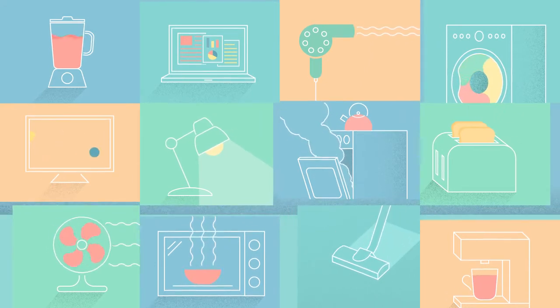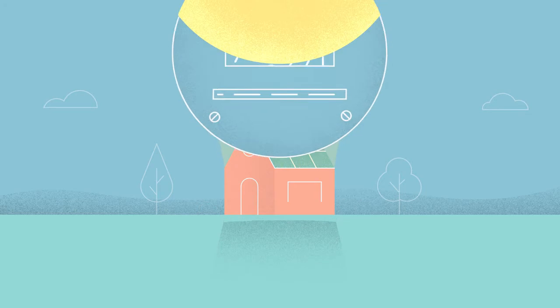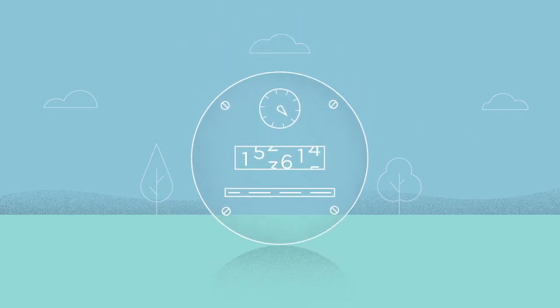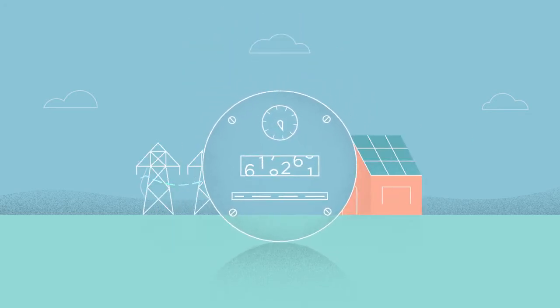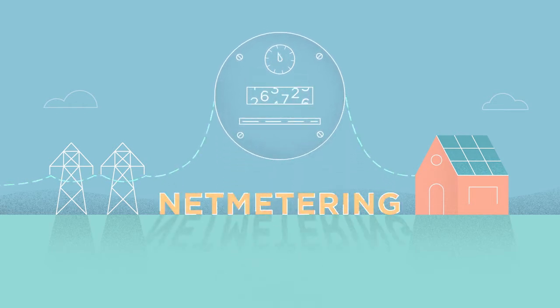During the day, most rooftop solar owners produce more electricity than they use. When that happens, the electricity meter literally runs backwards, sending the excess energy back to the grid. This process is called net metering.